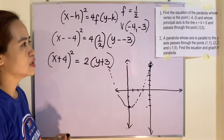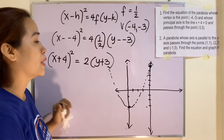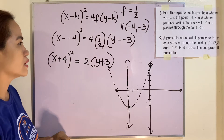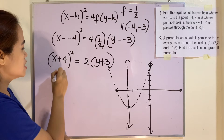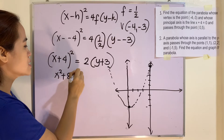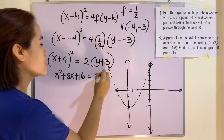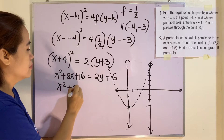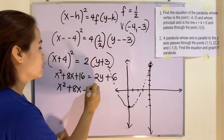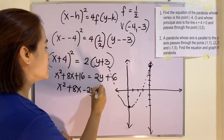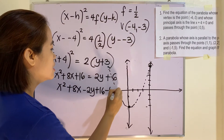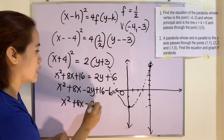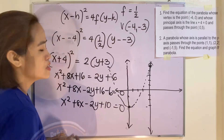This is already the standard form of the equation of the parabola. But if you are asked to give the general form, we expand: x² + 8x + 16 = 2y + 6, which gives x² + 8x - 2y + 10 = 0.